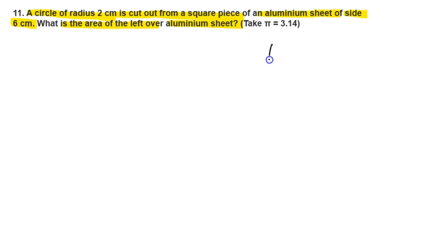So first of all, we draw here the aluminium sheet that is square shape and having a circle of radius 2 centimeters.